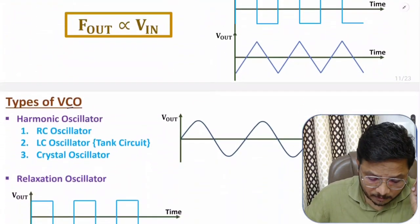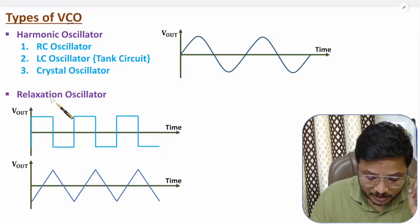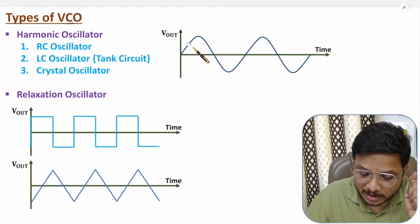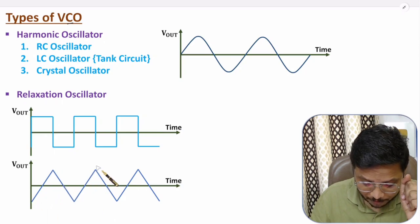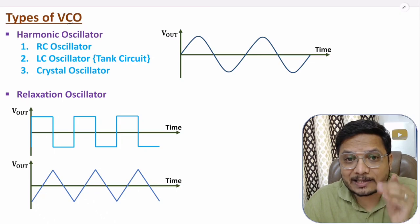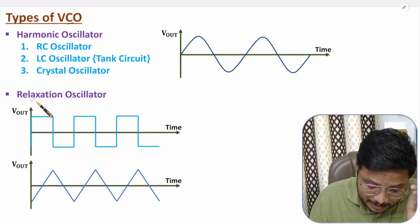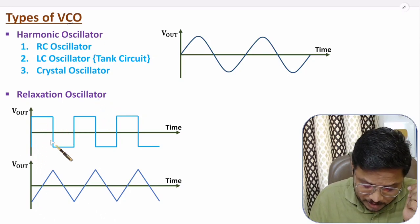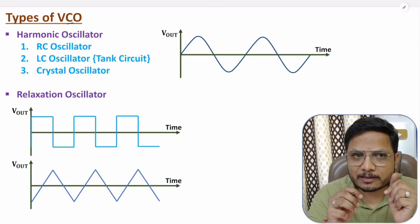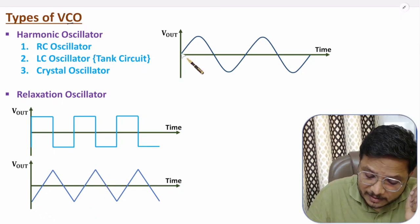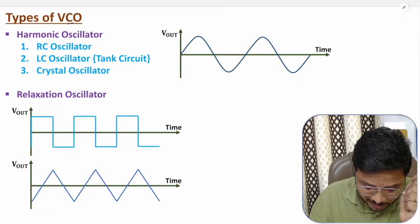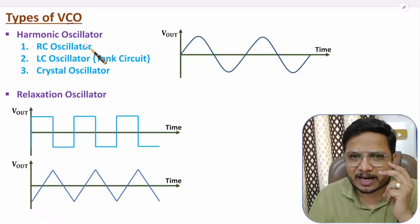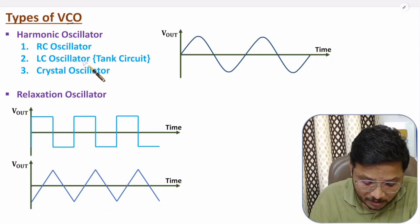There are basically two types of VCO: harmonic and relaxation. With a harmonic oscillator, output will be sinusoidal. With a relaxation oscillator, output will be a square wave, and if you connect an integrator, output will become a triangular wave. Harmonic oscillators include RC, LC, or crystal oscillator varieties.